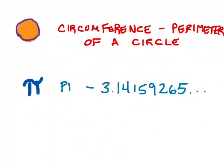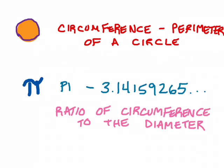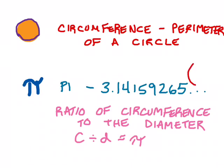Pi goes on forever, and while a lot of us know a fair chunk of its digits, many don't know what it actually represents. It's the ratio of the circumference to the diameter of any circle. If you take the circumference of a circle and divide it by the diameter of that same circle, it always equals pi. So the diameter times pi — 3.141592654 and so on — always equals the circumference. When dealing with fractions, we sometimes use 22/7 as a close fractional approximation of pi instead of a decimal.